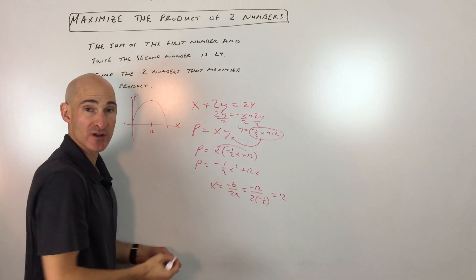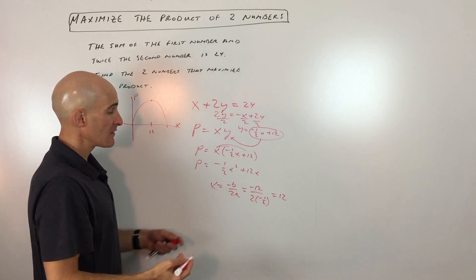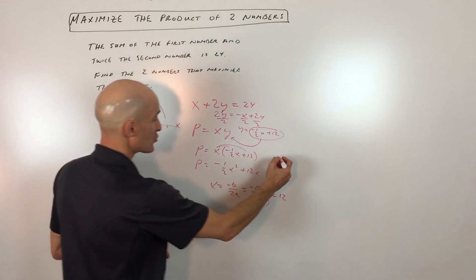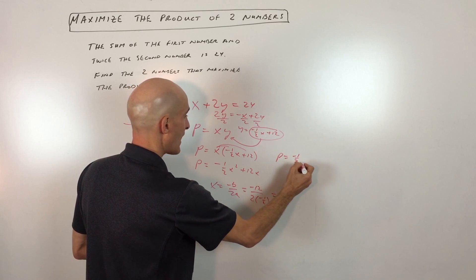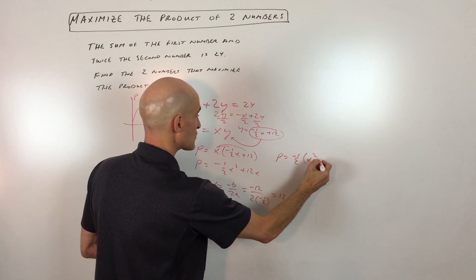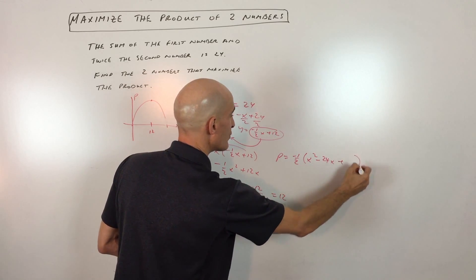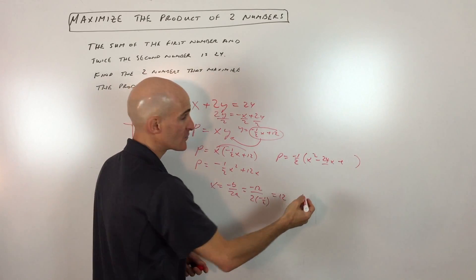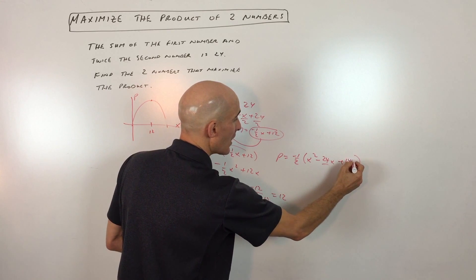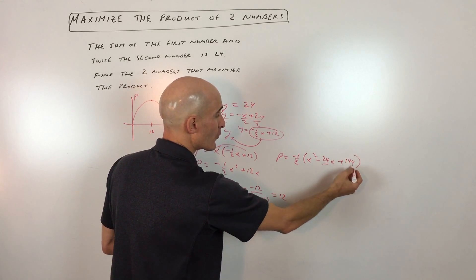Or you could do the completing the square technique and put it into vertex form. That's another way to do it. So let me show you that. It would be negative one-half, and we've got x squared minus 24x plus blank. Half of negative 24 is negative 12. Negative 12 squared is 144. But if we're adding 144,